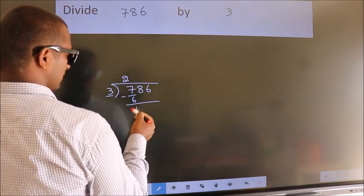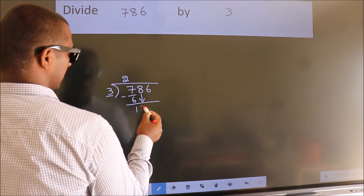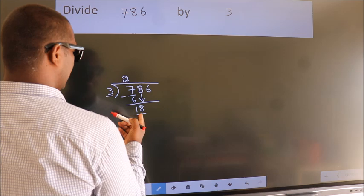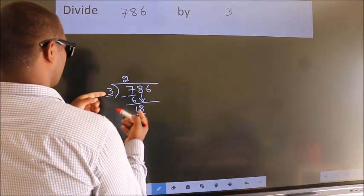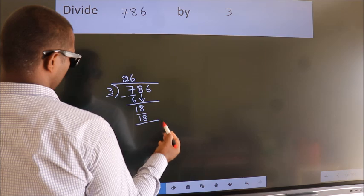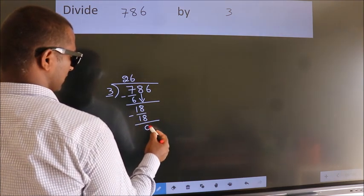After this, bring down the beside number. So, 8 down. So, 18. When do we get 18? In the 3 table. 3 times 6 is 18. Now we subtract. We get 0.